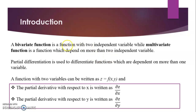Before moving to partial differentiation, first we'll understand the types of functions. A bivariate function is a function with just two independent variables. A multivariate function is a function which depends on more than two independent variables. In ordinary differentiation we find the derivative of just one independent variable, X, but in partial derivatives we differentiate bivariate and multivariate functions — functions dependent on more than one variable.